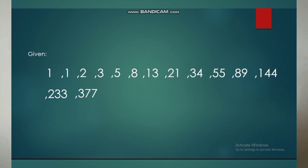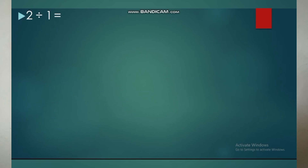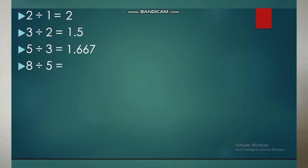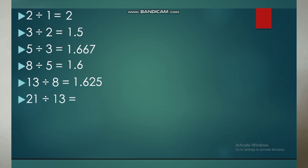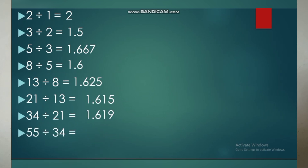We're going to divide the larger number by the smaller number. 2 divided by 1 is equal to 2. 3 divided by 2 is equal to 1.5. 5 divided by 3 is equal to 1.667. 8 divided by 5 is equal to 1.6. 13 divided by 8 is equal to 1.625. 21 divided by 13 is equal to 1.615. 34 divided by 21 is equal to 1.619.